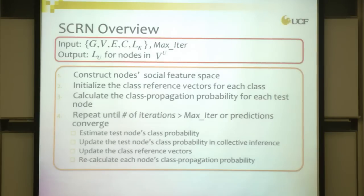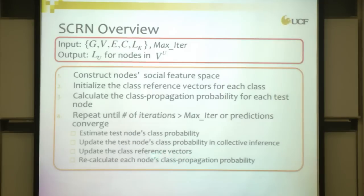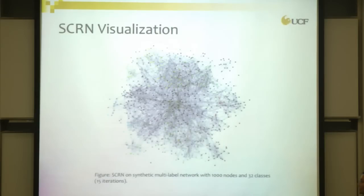The SCRN classifier improves on the relational neighbor classifier by identifying the probability of a specific node i having a label, conditioned not just on nearest network neighbors' class probabilities, but also on social features — specifically a class propagation probability term. The algorithm constructs the node social feature space, initializes class reference vectors for each class, calculates class propagation probabilities for each test node, then iterates: estimating class probability based on neighbors, updating class reference vectors as guesses on nodes change. A synthetic network with 1,000 nodes, 32 classes, and 15 iterations of SCRN converges quickly.